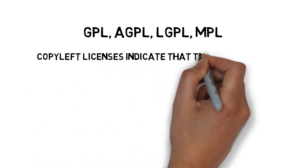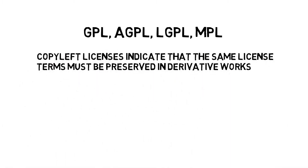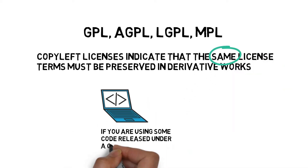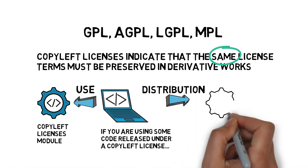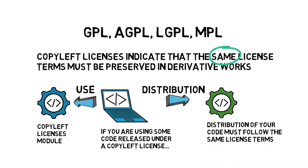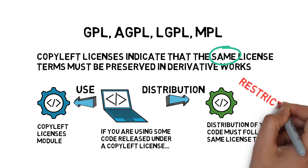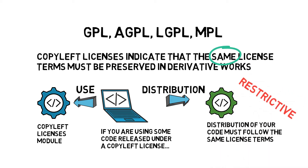GPL, AGPL, LGPL, and MPL are popular copyleft open-source licenses. Copyleft licenses indicate that the same license terms must be preserved in derivative works. It means that if you are using some code released under a copyleft license, the distribution of your code must follow the same license terms to let other people use it. Compared with permissive licenses which do not have such a restriction, copyleft licenses are considered restrictive, although they can guarantee open access to developers.